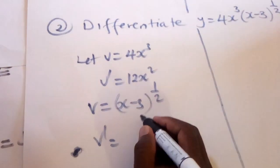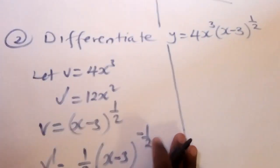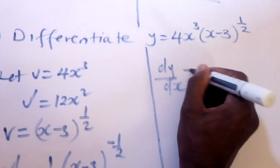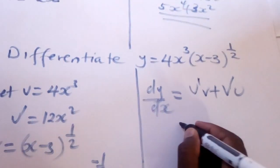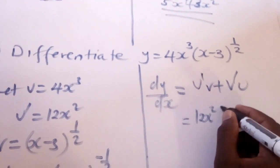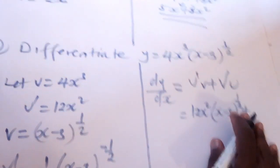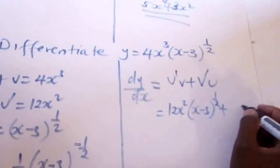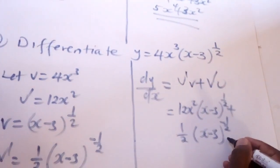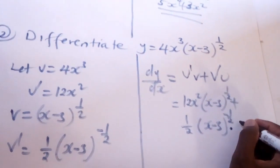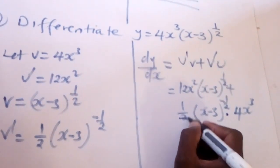We let v = (x − 3)^(1/2), so we find v̅. Our v̅ is (1/2)(x − 3)^(−1/2). Then dy/dx is given by u̅·v + v̅·u: u̅ is 12x² multiplied by (x − 3)^(1/2), plus v̅ which is (1/2)(x − 3)^(−1/2) multiplied by u which is 4x³. We can simplify the coefficient using 1/2.